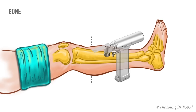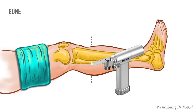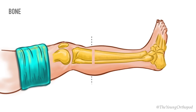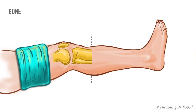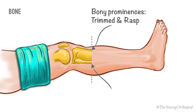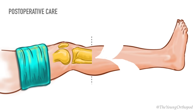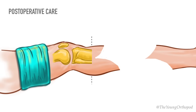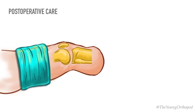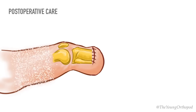Excessive periosteal stripping should be avoided to reduce regenerative bony overgrowth, and bony prominences should be trimmed and rasped to form a smoother contour. Proper bone and soft tissue handling are necessary for crafting a healthy and functional amputation stump. Poor handling of already traumatized and compromised tissues increases the risk of complications.